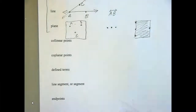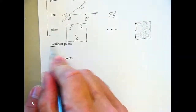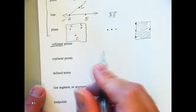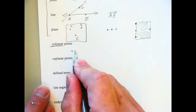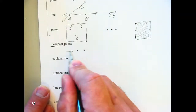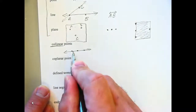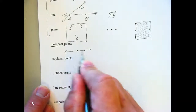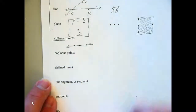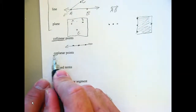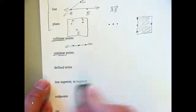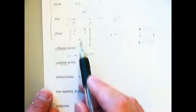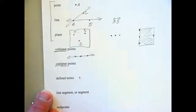Collinear points — tell your neighbor what a collinear point is. The word 'co' means together; 'linear' means line. Together on the same line — collinear means they're on the same line. A, B, and C up here — those are collinear. They're together on the same line.